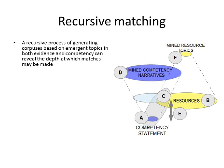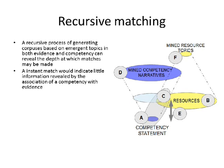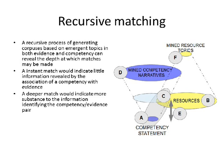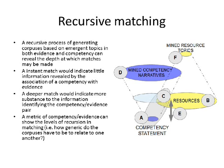A recursive process of generating corpuses based on emergent topics in both evidence and competency can reveal the depth at which matches may be made. If there's an instant match, it would indicate that very little information is revealed by the association of competency with evidence — we saw this a lot in Trailer. A deeper match would indicate more substance to the information being revealed, and we can establish a metric of competency-evidence which shows the level of recursion at which the matching takes place.